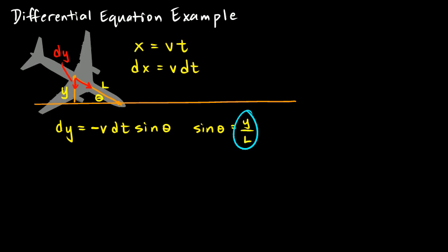So, we can just substitute that right there for sine theta. And so, we can write dy is equal to negative y over l times vdt. And you see the vdt was right there. And the sine theta was written right there as y over l. And we still have the negative sign.